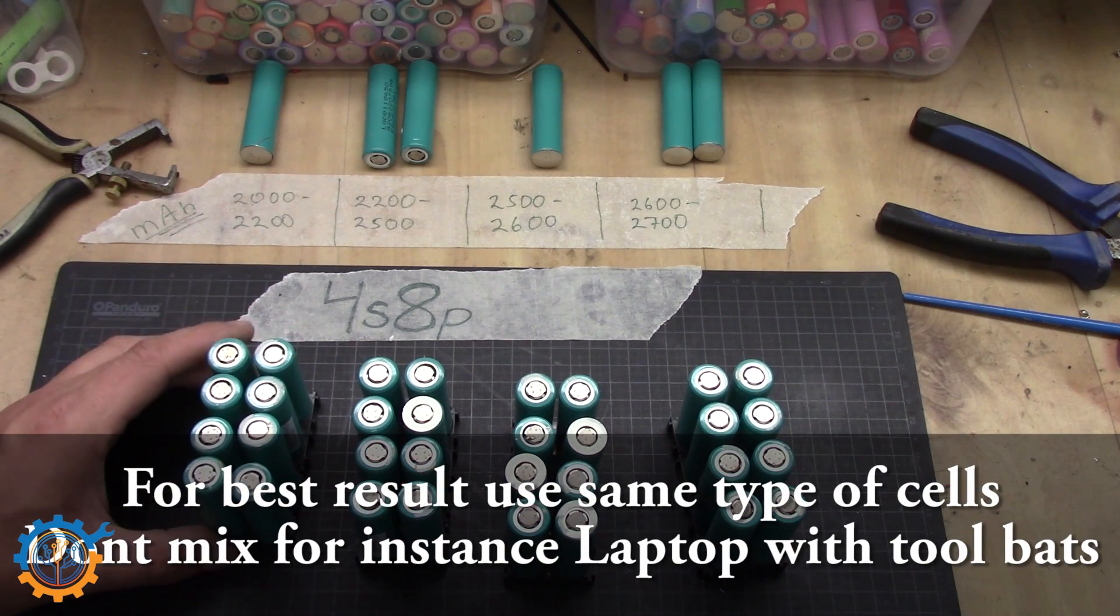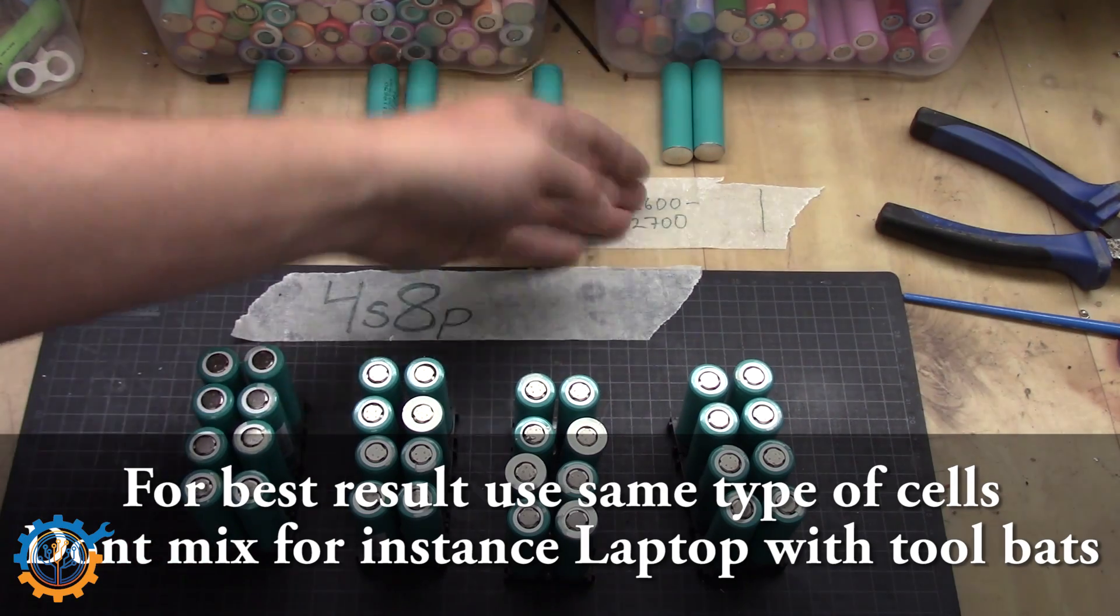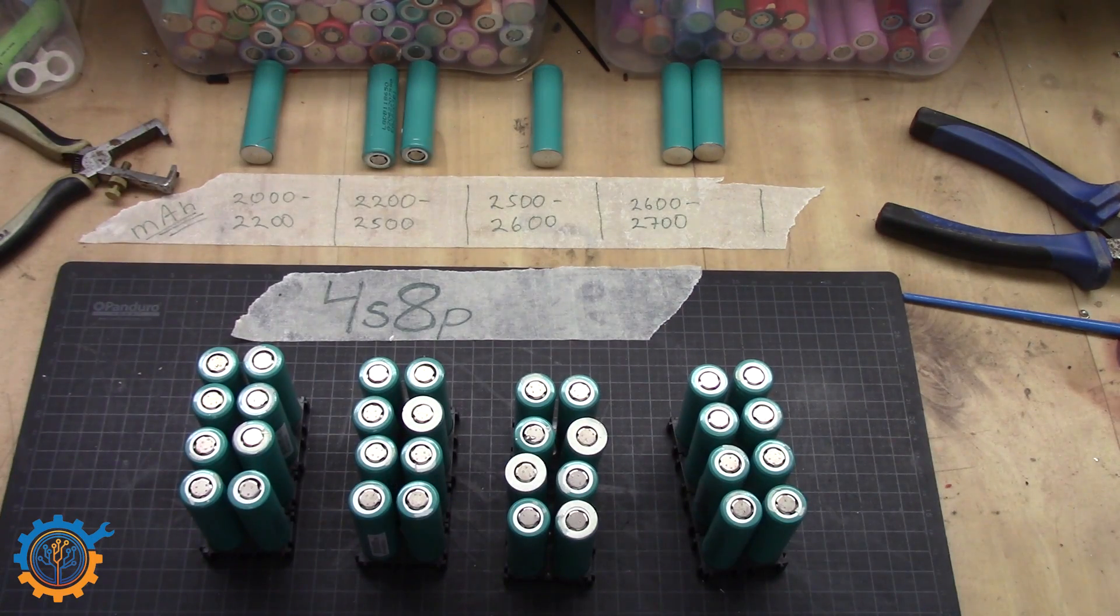If you are playing around with internal resistance, you can of course use this as well. You can sort it in capacity and resistance and sort it the same way as I do here.